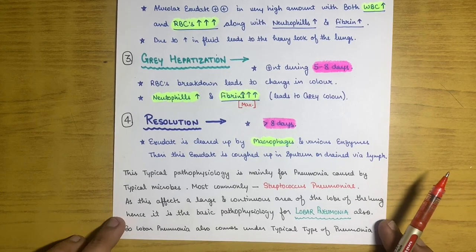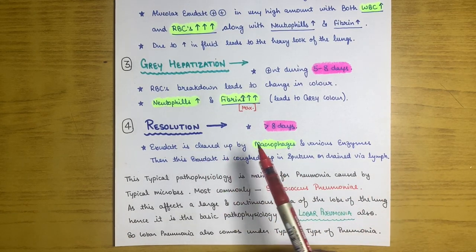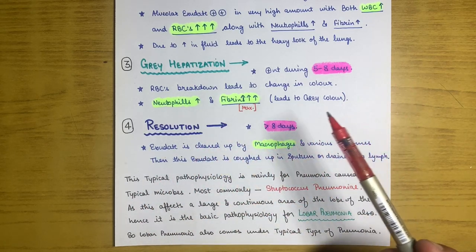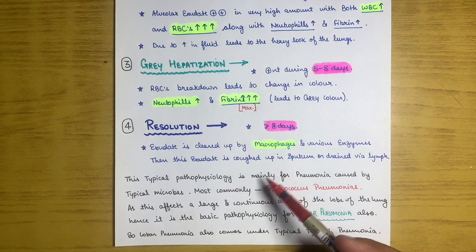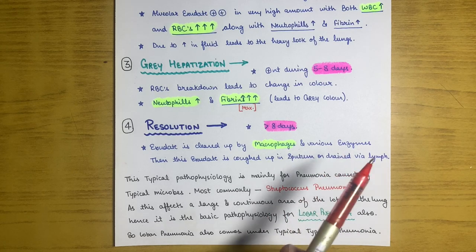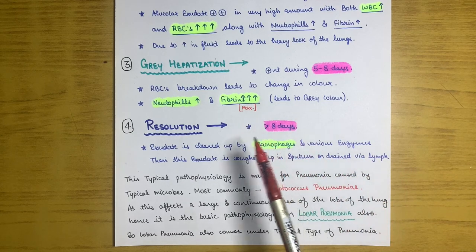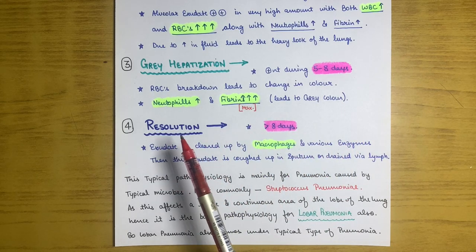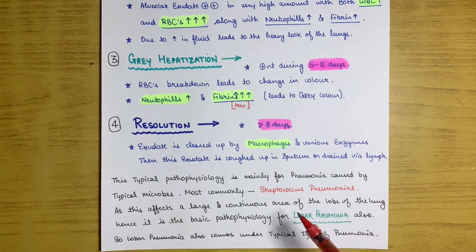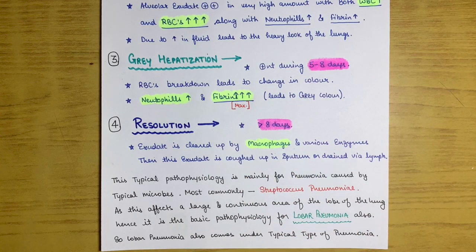The fourth and last stage is resolution, occurring after eight days. Exudate is cleared up by macrophages, and various enzymes help clear the material from the alveoli. The exudate is then coughed up in sputum or drained via lymphatics. This typical pathophysiology applies mainly to pneumonia caused by typical microbes, most commonly Streptococcus pneumoniae, affecting a large continuous area of the lobe — so it is also the pathophysiology of lobar pneumonia.